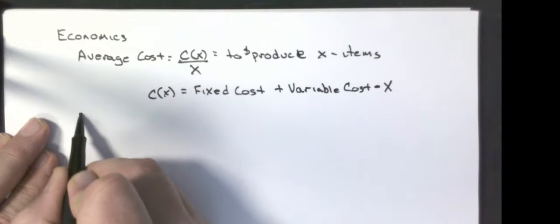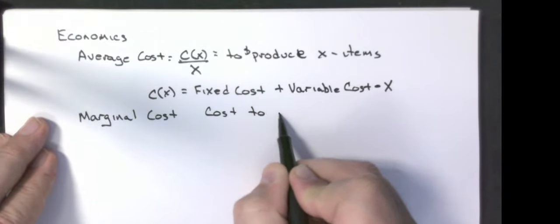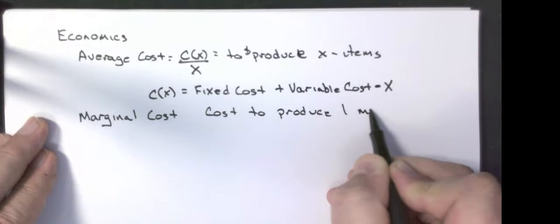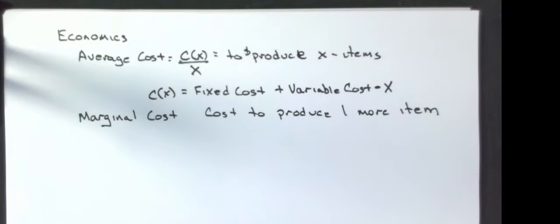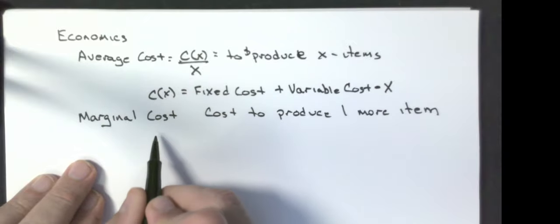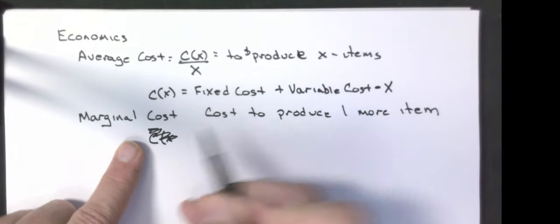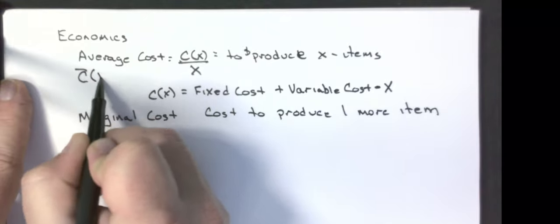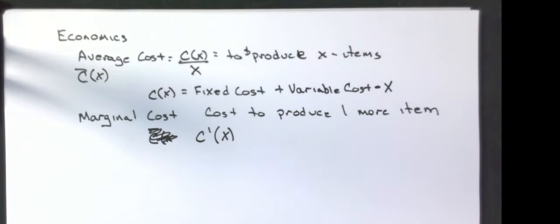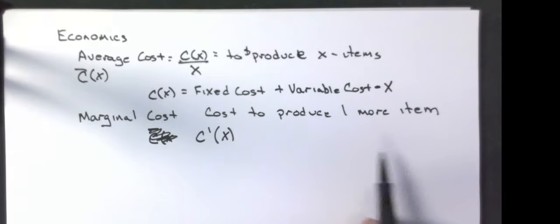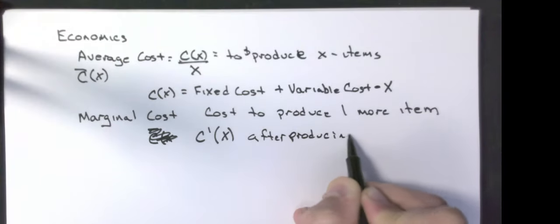Then we have something called marginal cost — that is the cost to produce one more item. The marginal cost is C prime of X. So that's going to be the approximate cost to produce one more item after producing X items.